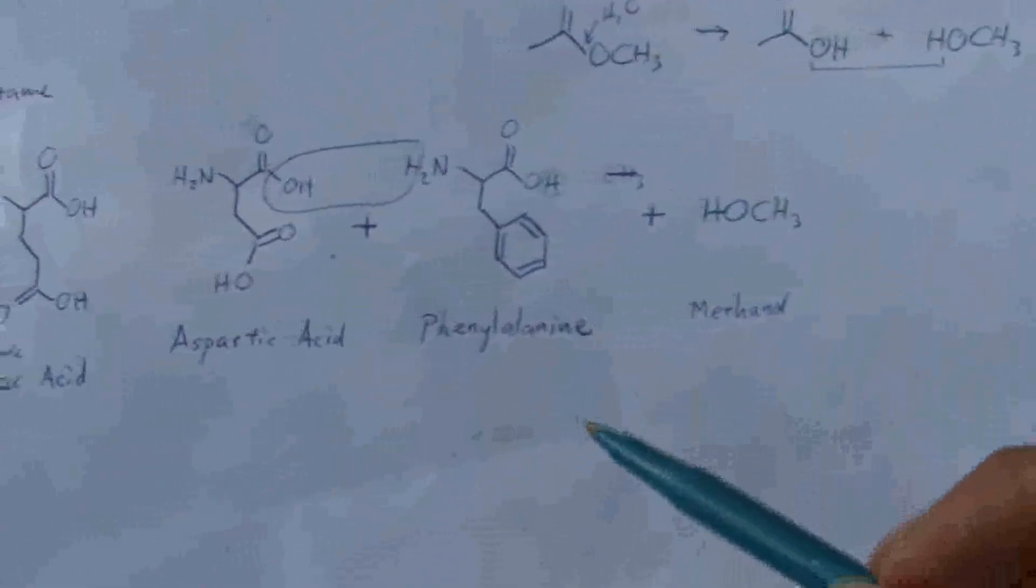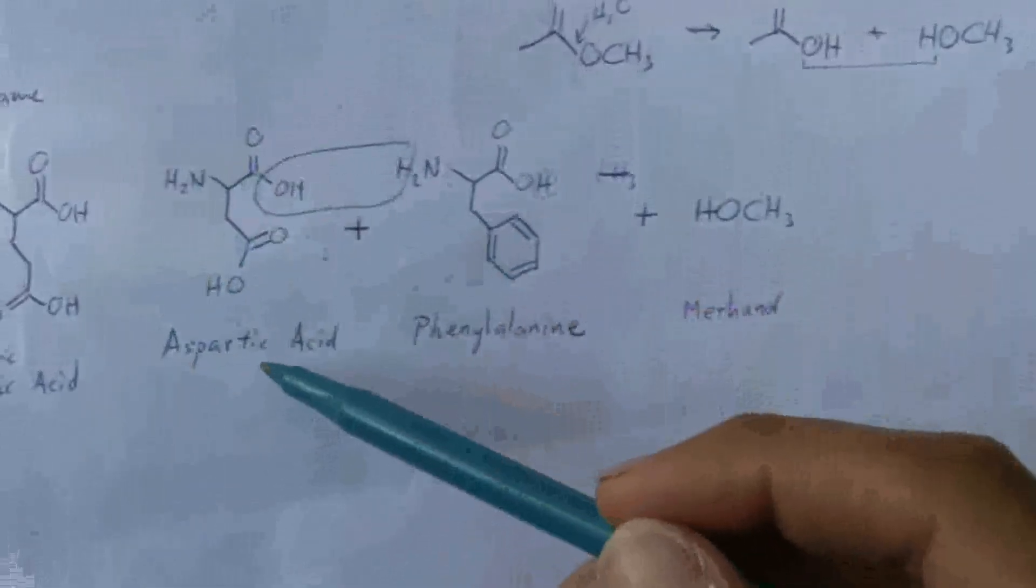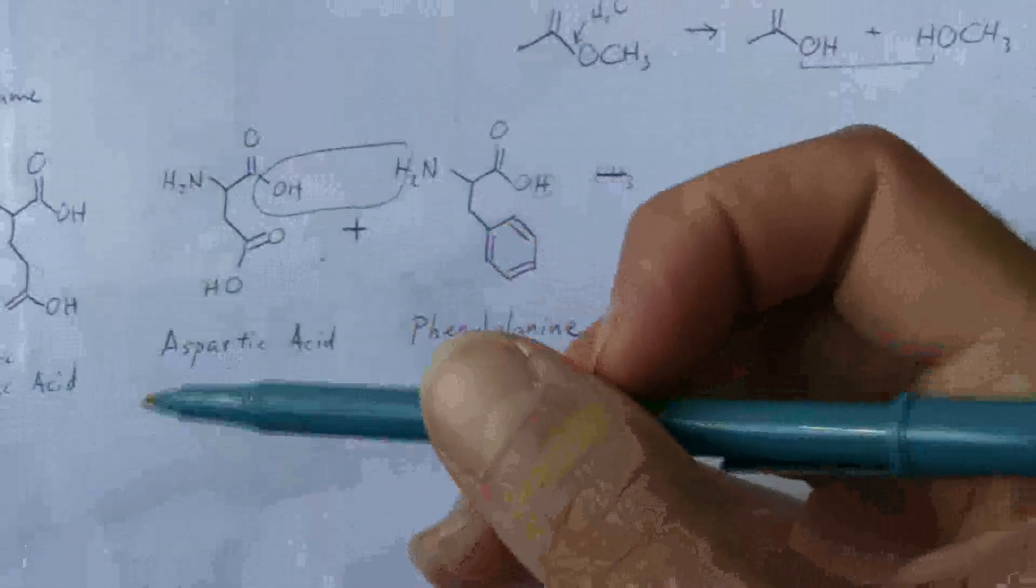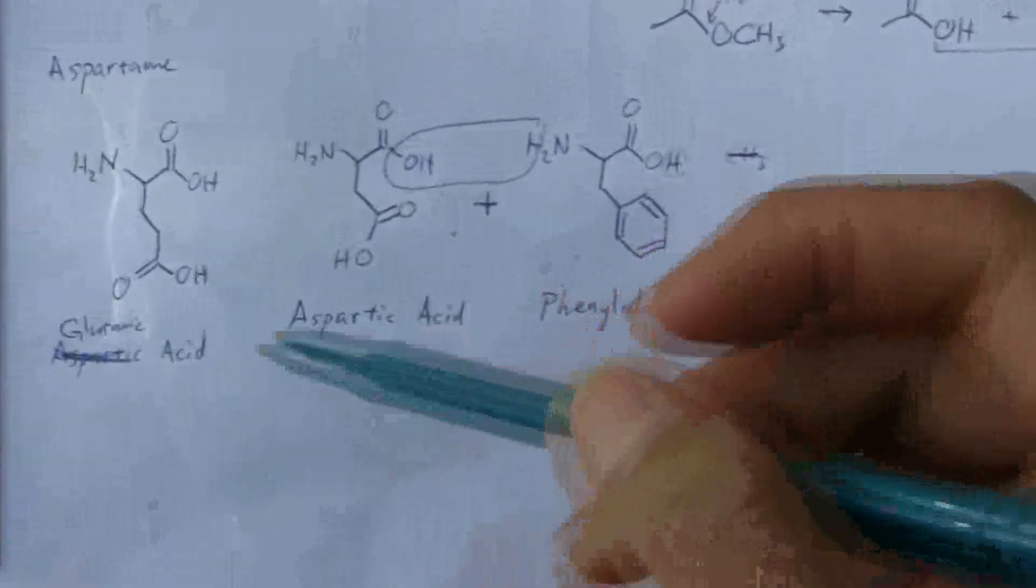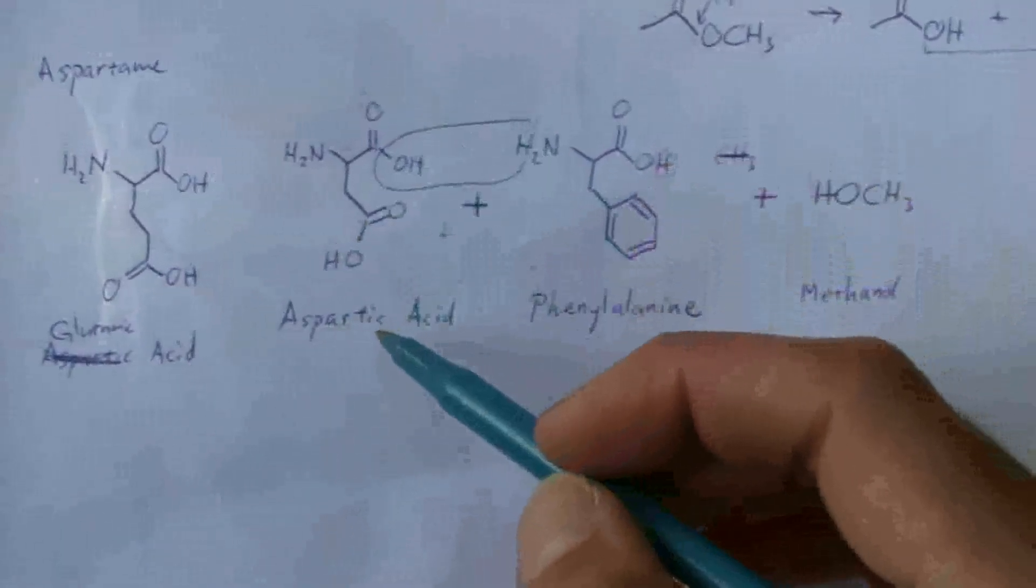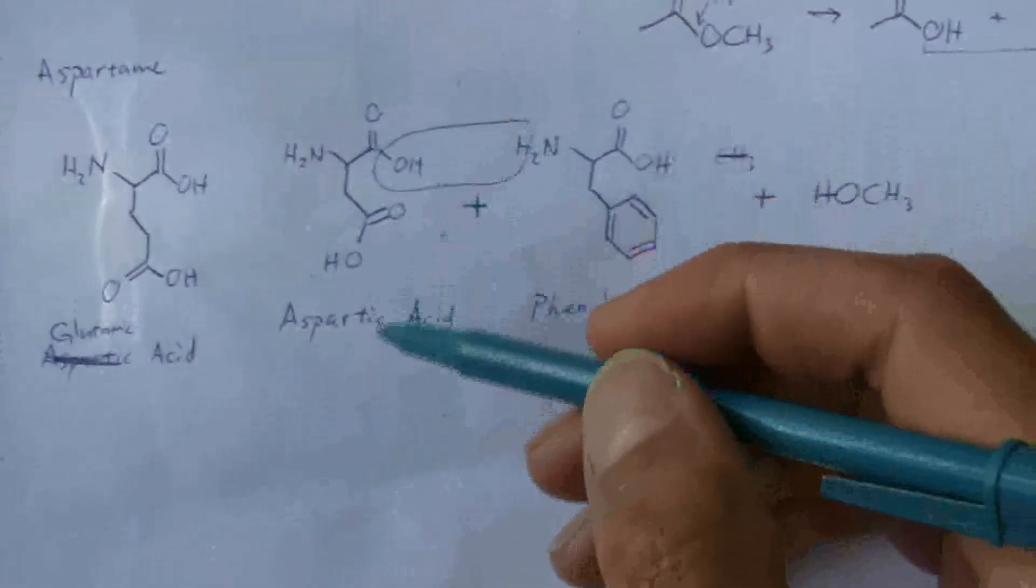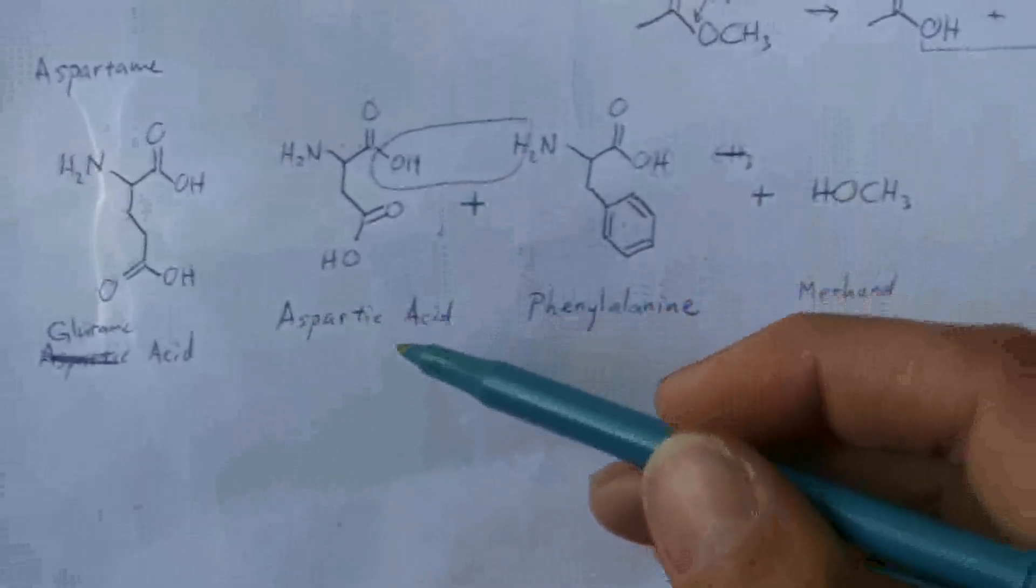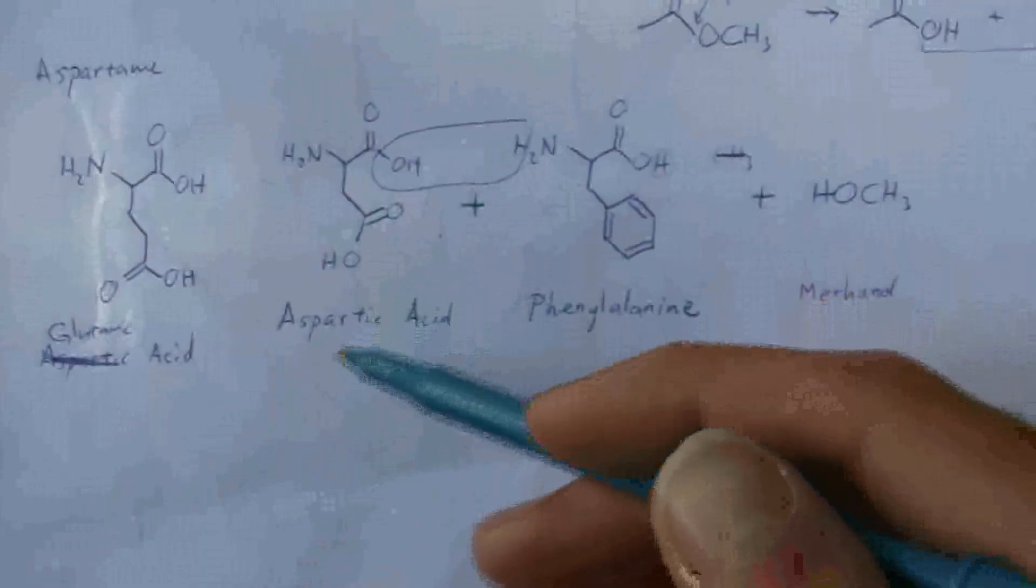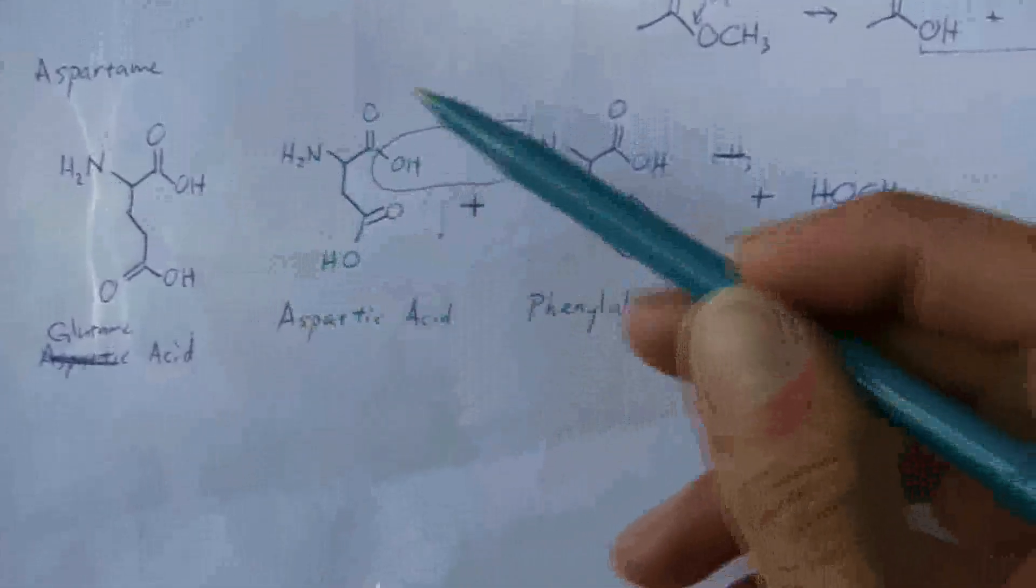So without going into any more detail, you have the same situation going on with the aspartic acid that we saw with glutamic acid, as far as at different pHs. It's going to be aspartate instead of aspartic acid, and it's the aspartate form that is the neurotransmitter form, that's the form that it will be in as soon as it gets absorbed into the bloodstream. Same situation.